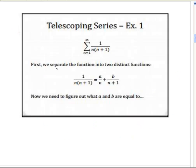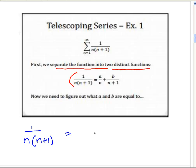What we're going to do is separate the function into two distinct functions. We're going to separate 1 over n times n plus 1 into two terms: the first term is a over n, where we call the coefficient a, and the second term is b over n plus 1. We need to evaluate for a and b.